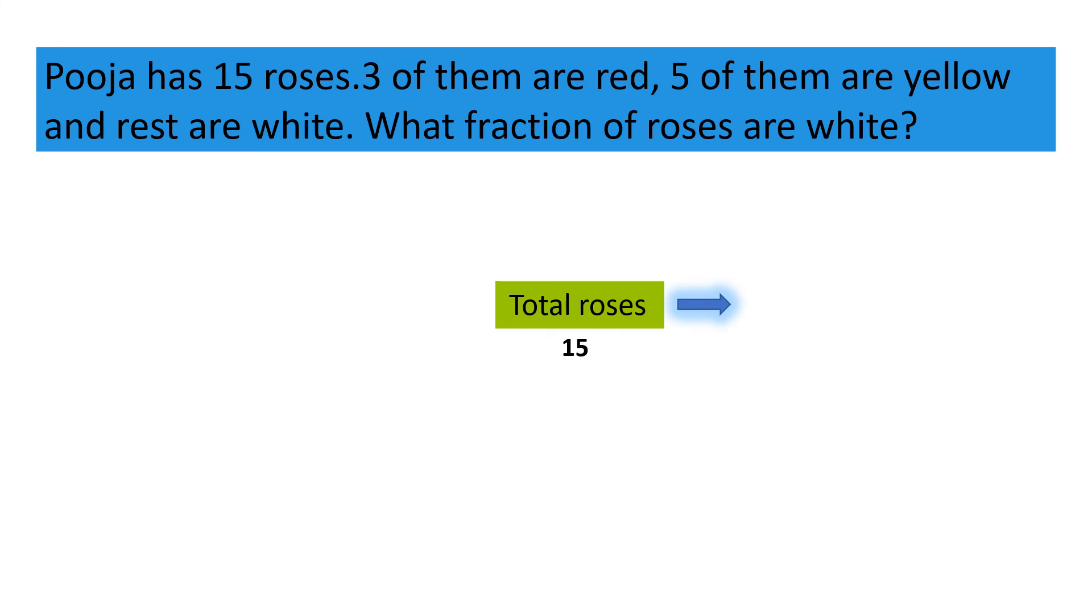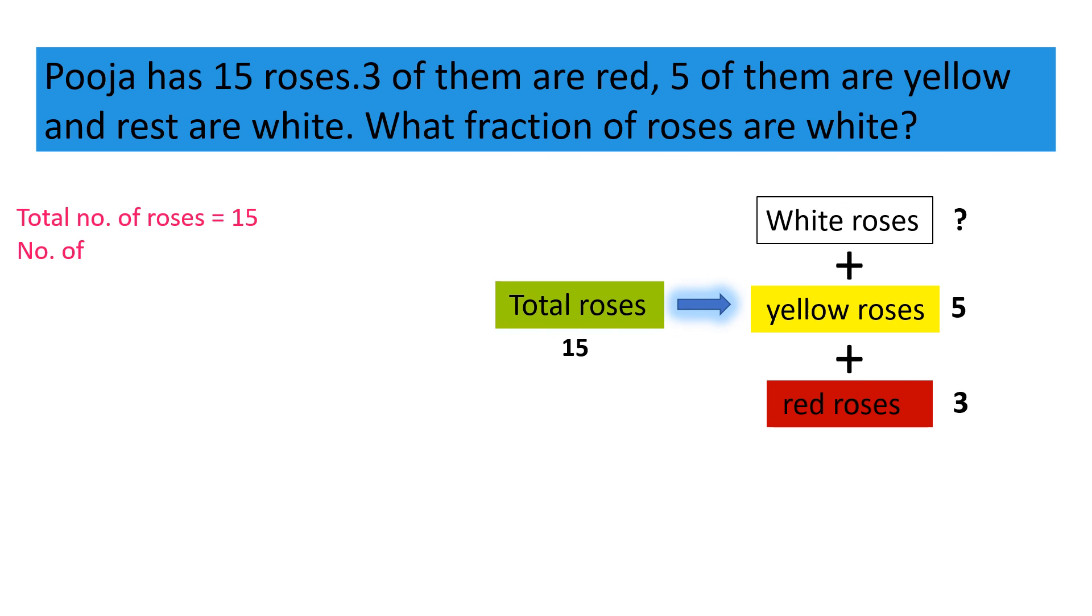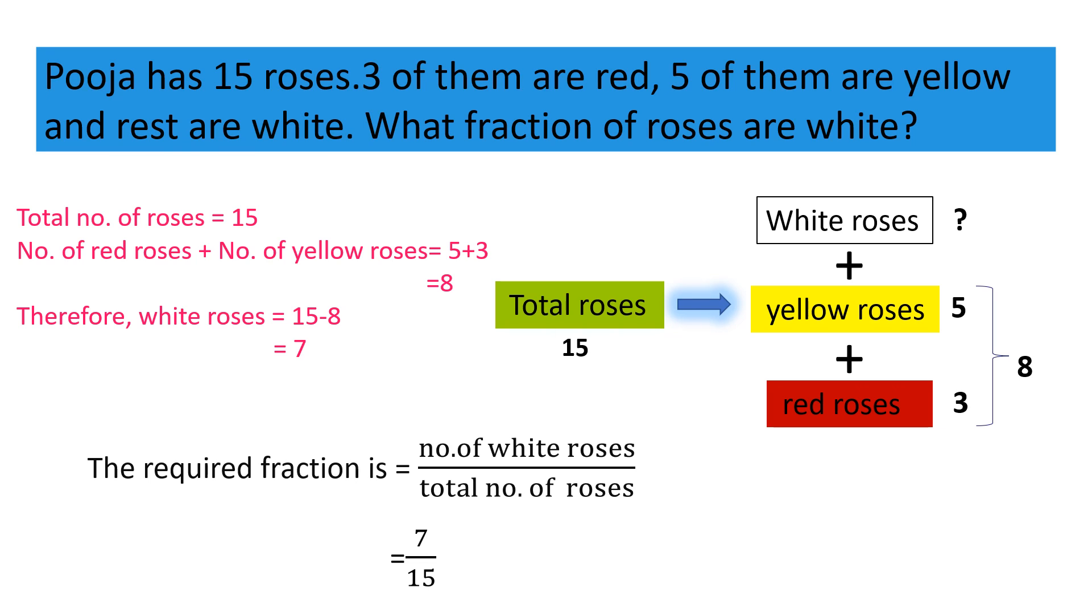Total number of roses 15, number of red roses 3, number of yellow roses 5 and there are some white roses. So, if we add yellow roses with the red roses and then subtract it from the total number of roses, then we can find number of white roses. Now, let us do the sum. Total number of roses 15, number of red roses plus number of yellow roses equal to 5 plus 3 is equal to 8. Therefore, white roses equal to 15 minus 8 equal to 7. Now, what fraction of roses are white? The required fraction is number of white roses divided by total number of roses equal to 7 by 15.